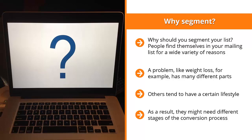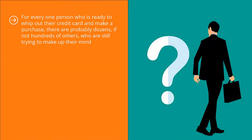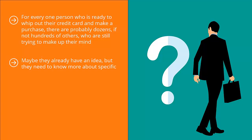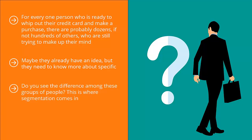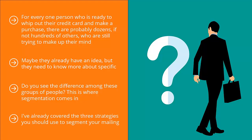Some may need more information before they commit to buying a product. Others are already clear on the solution but just need a recommendation they can trust. Obviously, you can't send the same message to these people and expect the same results. For every one person who is ready to whip out their credit card, there are probably dozens if not hundreds of others who are still trying to make up their mind. Maybe they're looking for more information, or they need to know more about specific solutions, or they just need you to push them off the fence. This is where segmentation comes in — you need to set up a process where people can be sent messages that will push them closer to the point of conversion.